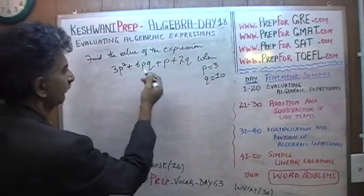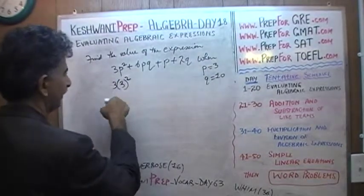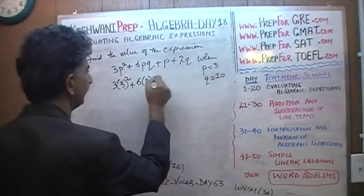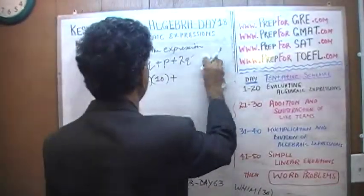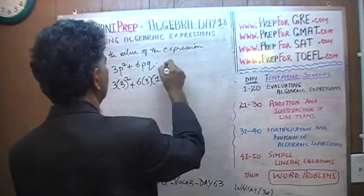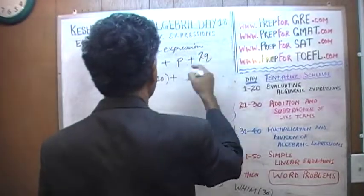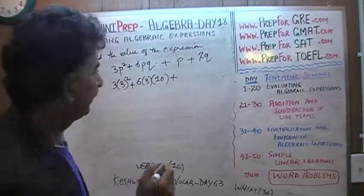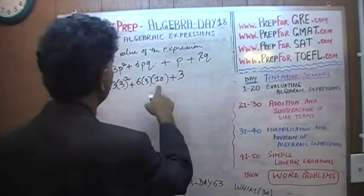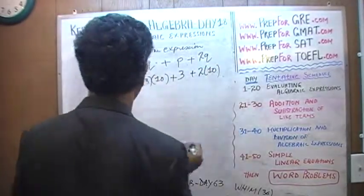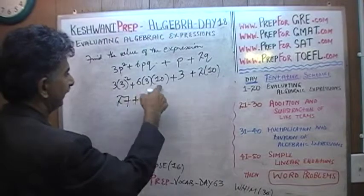So when p is 3 and q is 10, let's do it. We go through the expression and wherever we see p we replace it with 3. So p squared becomes (3) squared — there's another parenthesis. Plus 6 times (3) times (10), plus (3) plus 2 times (10). So: 3 squared is 9, times 3 is 27, plus 6 times 3 is 18 — 18 times 10 is 180.